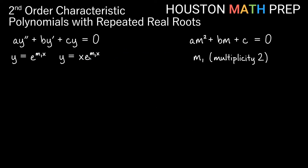Now we'll show why x·e^(m1·x) is a solution when e^(m1·x) is a solution and m1 is a root of multiplicity 2. We already know e^(m1·x) is a solution from a previous video. If x·e^(m1·x) is also a solution, we should be able to plug it in for y and get a true statement, so we also need y' and y''.